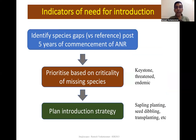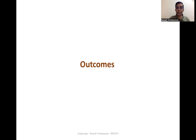We normally monitor a site for five years to see what returns naturally and identify important species gaps — such as keystone, threatened, or endemic plant species. Based on this we plan introductions, either through sapling planting or increasingly through seed dribbling, which is closer to natural processes. We also adopt transplanting of grass clumps where required.